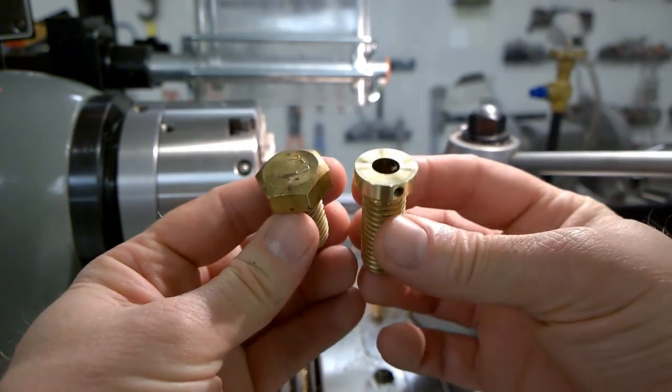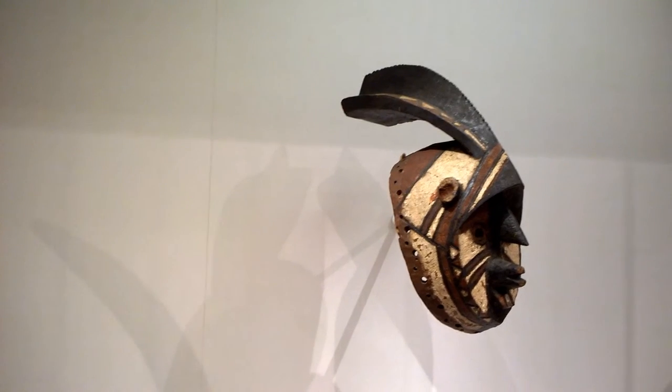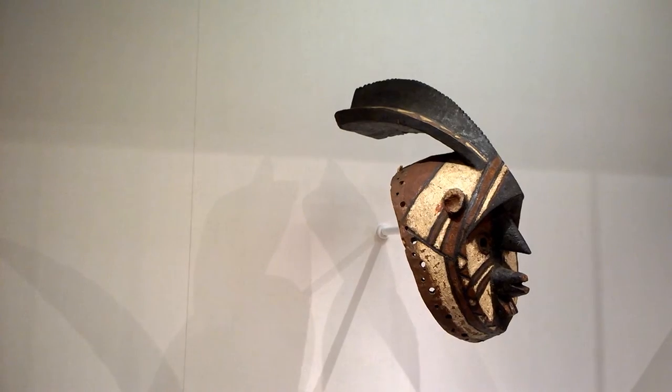In this introductory video, I will discuss how to make a mount socket out of a brass hex head bolt. A mount socket is used to mount artwork to either the wall or the deck, as in the case of this African mask.